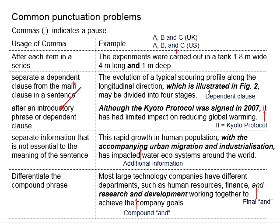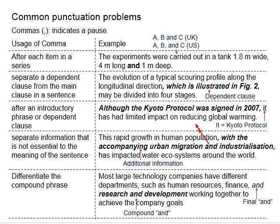Next, you use a comma after an introductory phrase or dependent clause. Taking this as an example: 'Although the Kyoto Protocol was signed in 2007, it has had limited impact on reducing global warming.' The first half of the sentence is the introductory phrase, and then the second half gives the main information. The message here is that the Kyoto Protocol has limited impact on reducing global warming, while the additional information is that it was already signed in 2007.